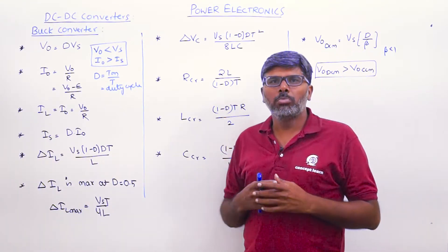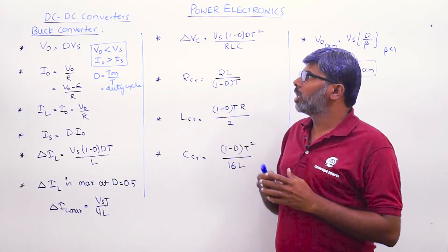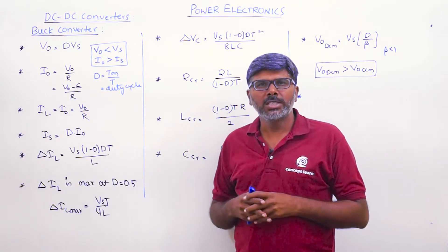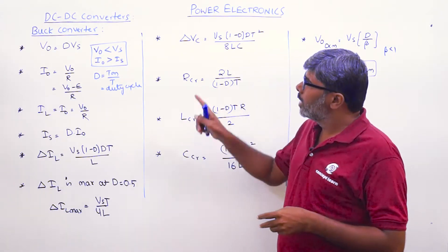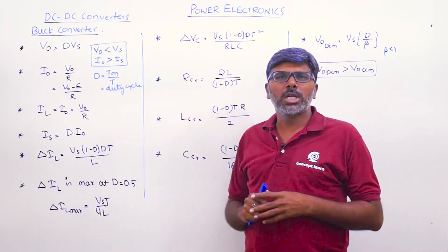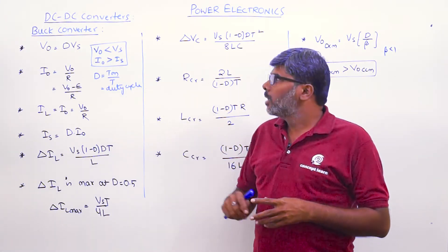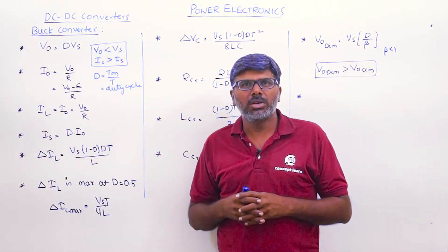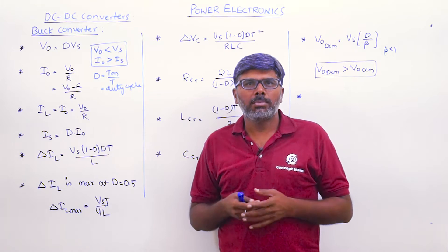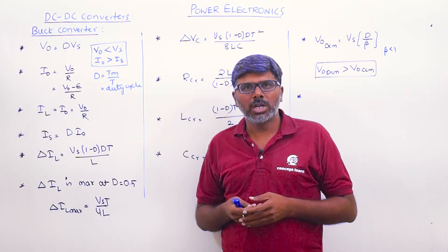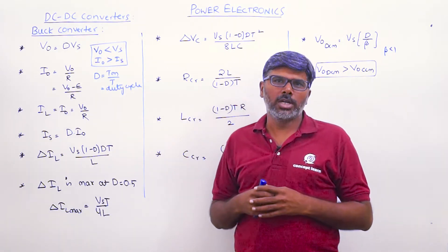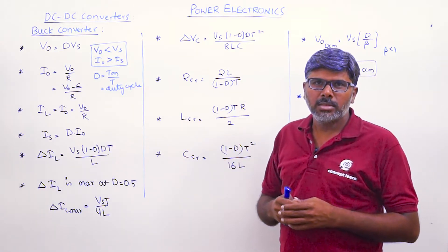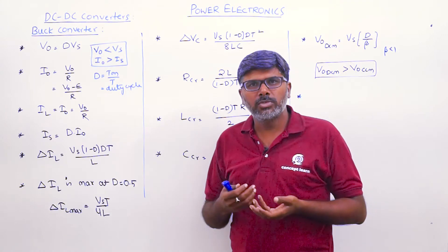Let me talk about another important module called a DC-to-DC converter, also known as a chopper. This module is very important for the examination. There are different types of DC-to-DC converters: the buck converter, the boost converter, and the buck-boost converter. First, let me discuss buck converter analysis, then move to the other two.